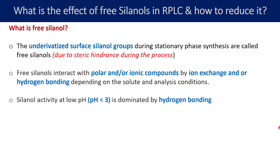The silanol groups will remain unionized at lower pH, and hence there will be no ionization. If there is no ionization, ion exchange will not take place — ion exchange cannot occur if there are no ionic groups available on the stationary phase. But there is still hydrogen present on the SiOH, and if there are amine or basic functional groups on the analyte, they can form a hydrogen bond. So, at pH less than 3, hydrogen bonding becomes the prominent interaction.